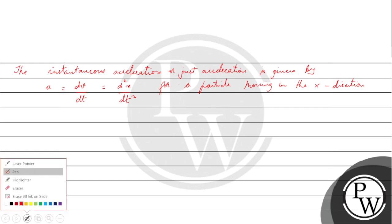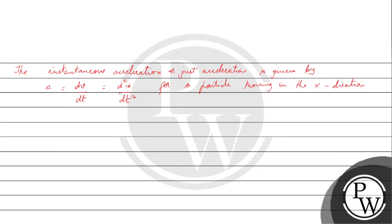So, to solve this problem, pehle hum jo expression diya hua hai question mein usko likhenge. Given the equation for x with respect to time: x is equal to minus 20 plus 5t squared.